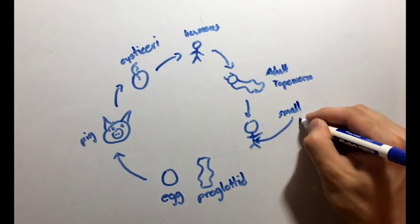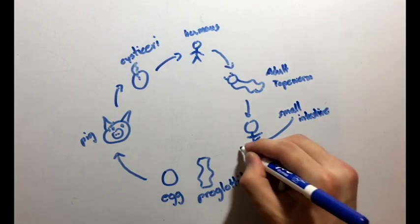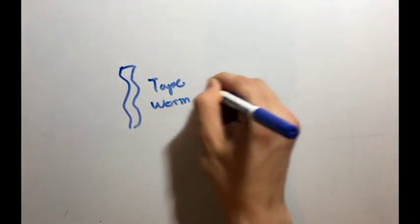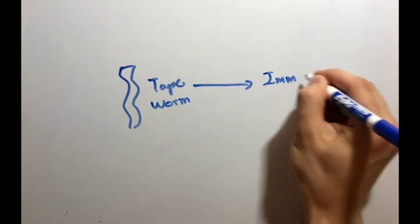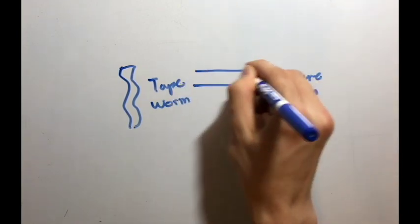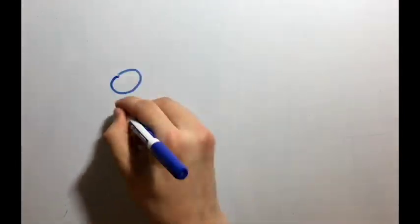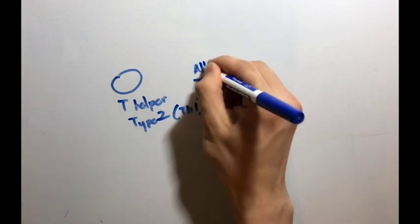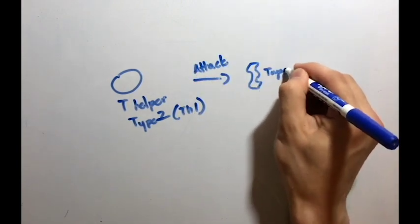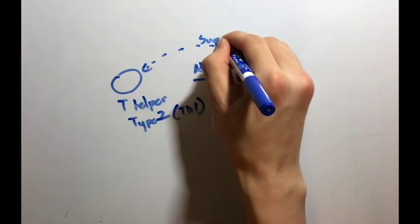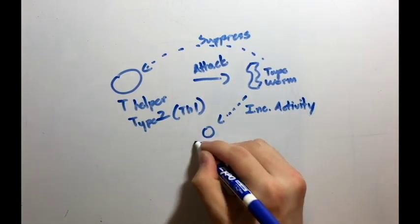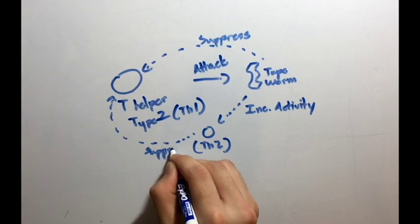But why did the patient have no symptoms? Extensive research shows that tapeworms have the ability to deactivate certain immune system cells, leading to an immune relaxation. The tapeworm suppresses T helper type 1 cells, TH1 cells, which are responsible for attacking antigens. Tapeworms also induce activity from T helper type 2 cells, which are responsible for down-regulating TH1 cells to prevent hyperactive immune responses.